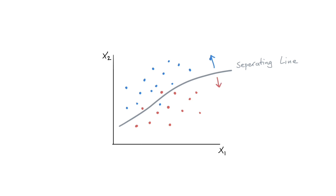Now, typically these classifications will never be perfect. There will be some blue dots on the red side of the line, and there will be some red dots on the blue side of the line. And given this fact, I hope you might agree that maybe it's a pretty good idea to talk about how confident we are in our predictions.